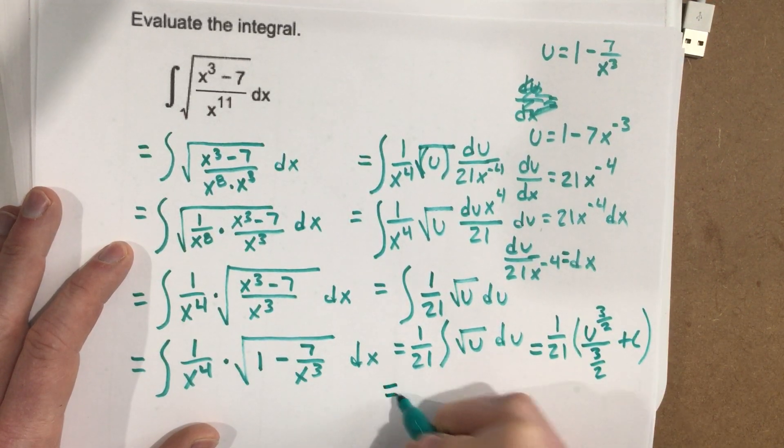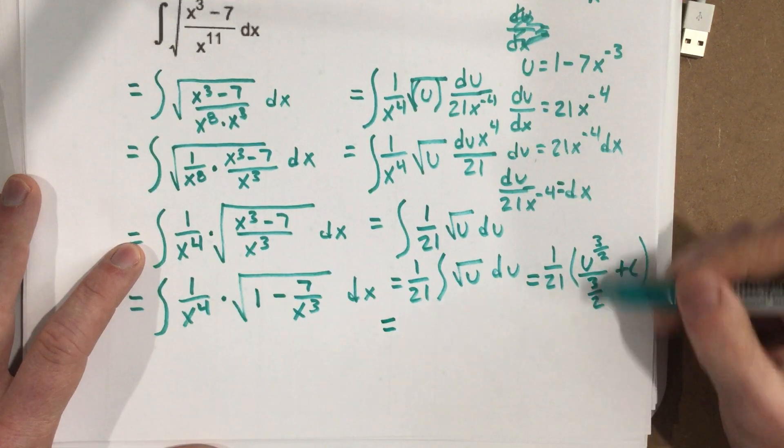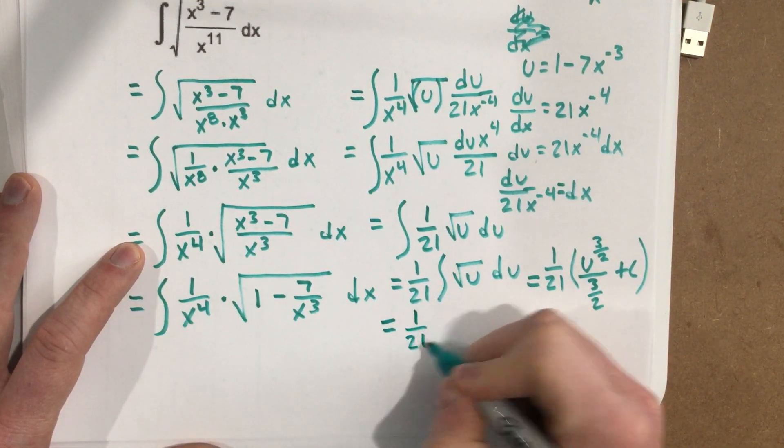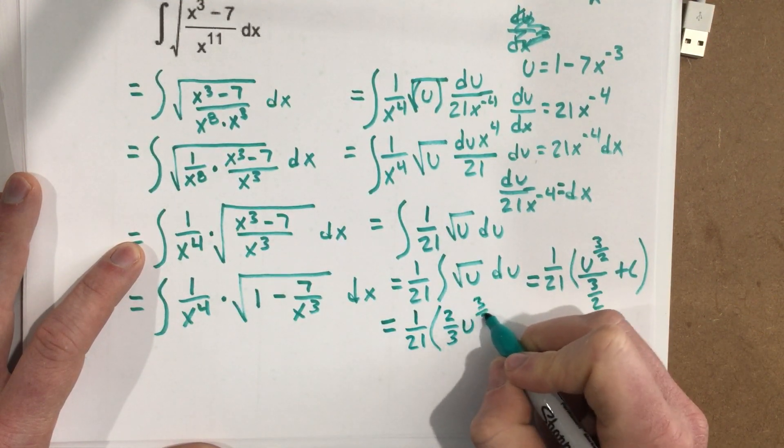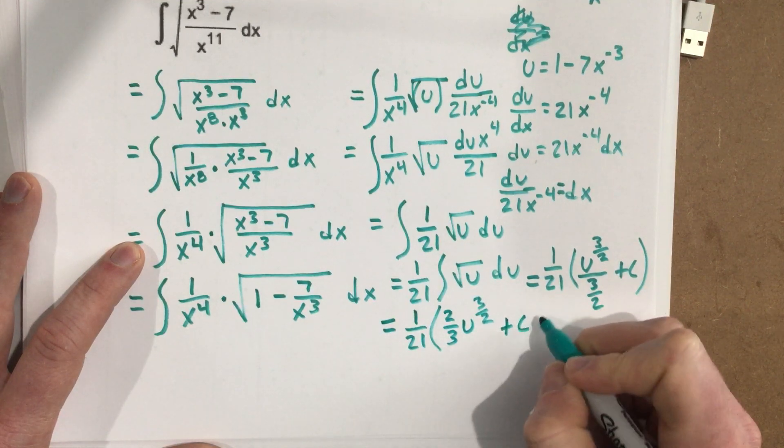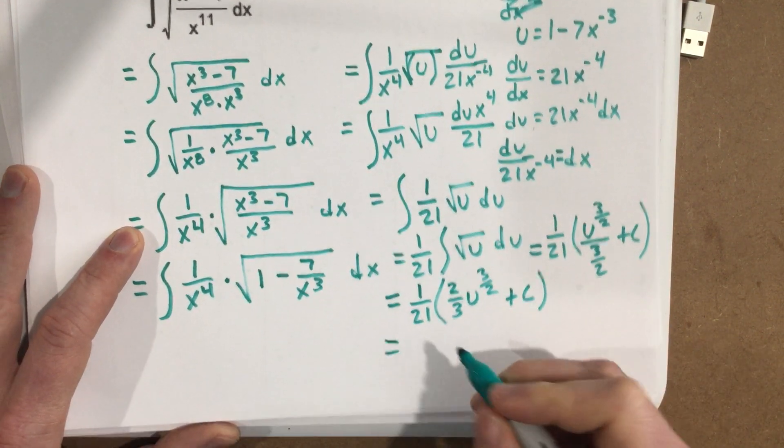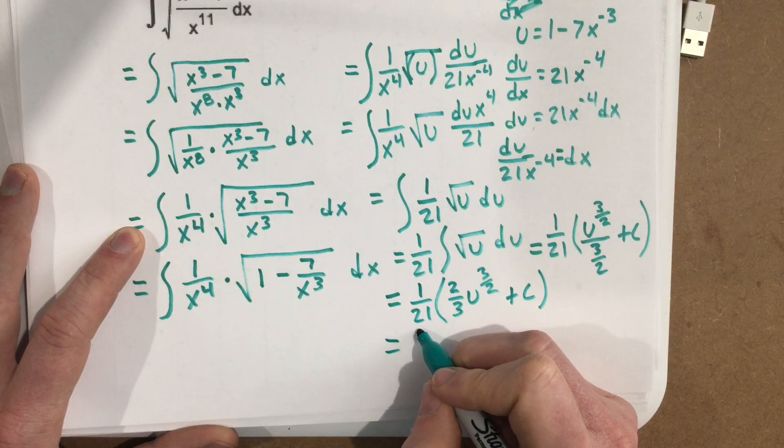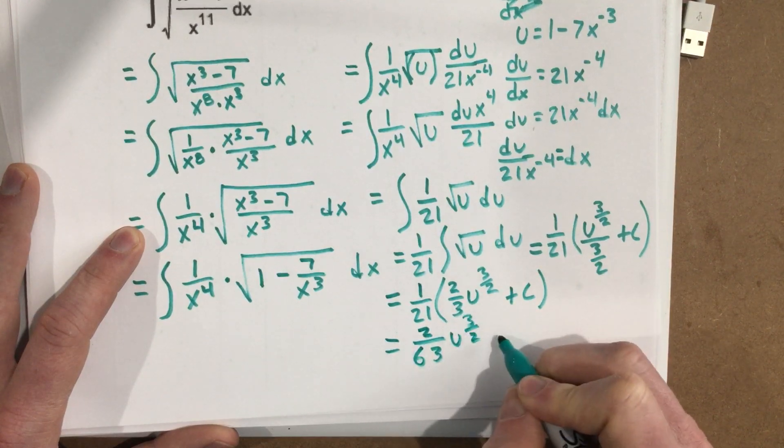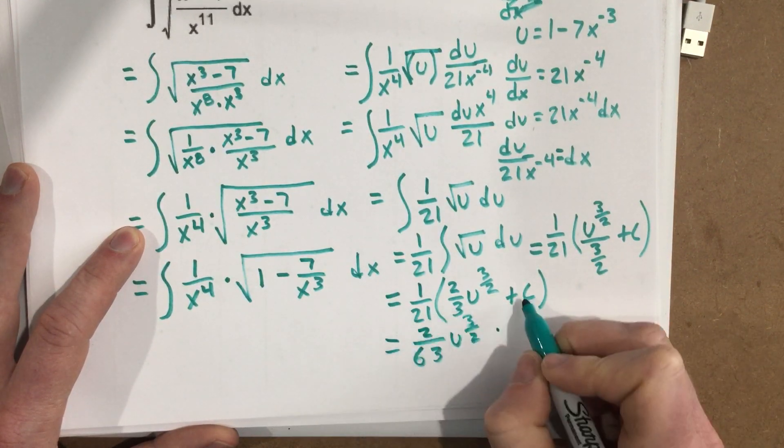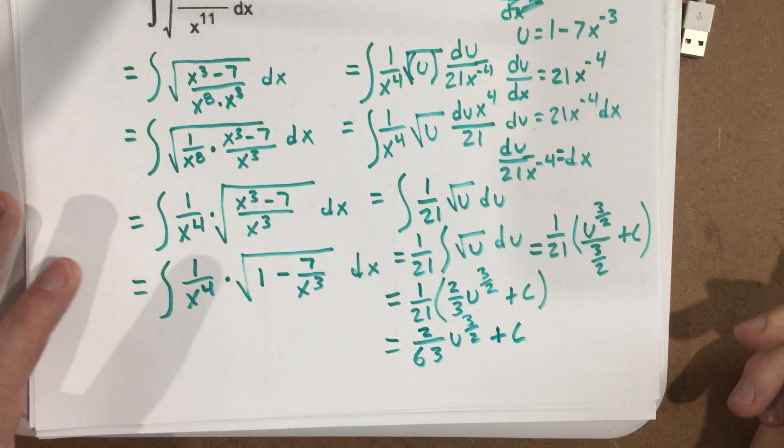I can now write that as, when I flip this and multiply it, I get 1 over 21, 2 thirds, u to the 3 halves plus c. When I multiply this in there, I'll get 2 over 63, u to the 3 halves. And when I multiply that times c, remember 1 over 21 times c is just going to be plus c, because a constant times another constant is just going to be a constant.